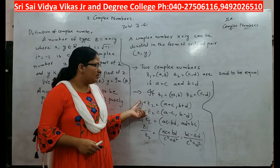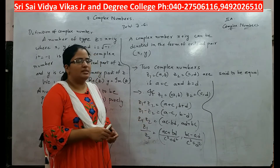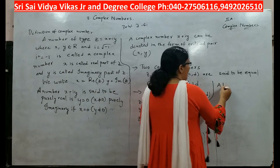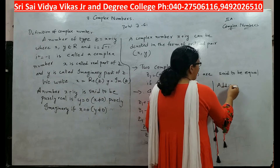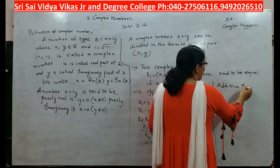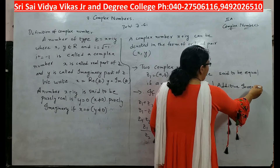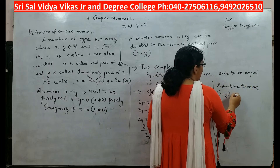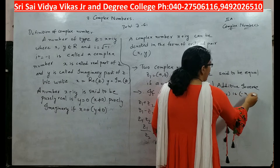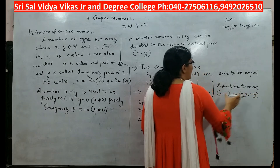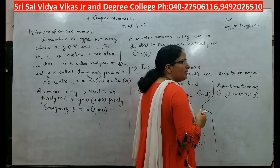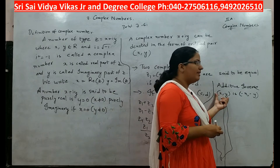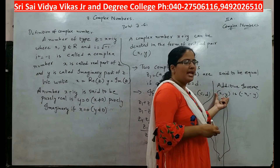Remember z1 plus z2 and z1 minus z2. The additive inverse of the complex number (x, y) is (−x, −y). That is, when you add these two complex numbers you get zero, so (−x, −y) is the additive inverse of (x, y).